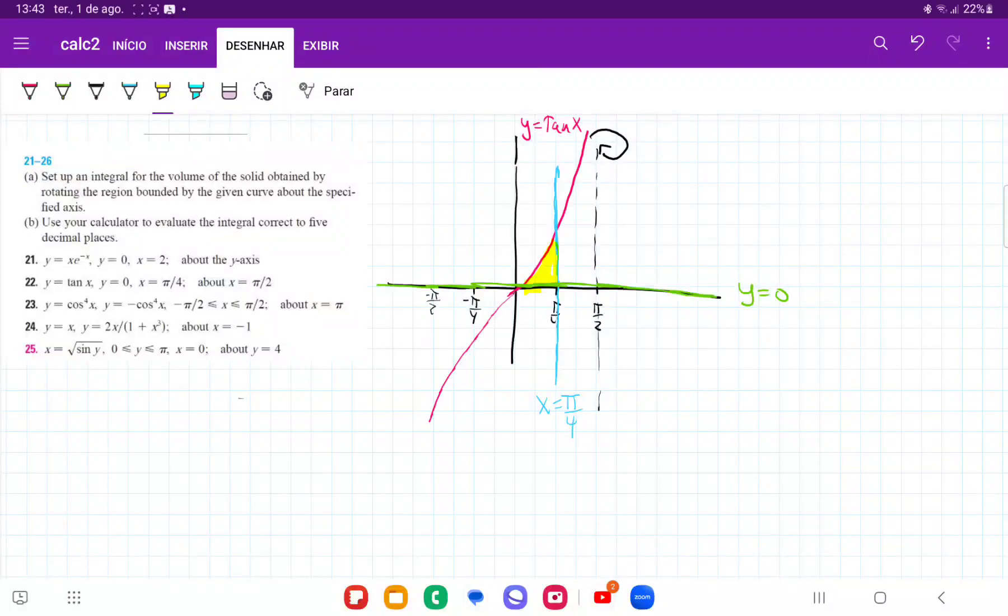For number 22, they want us to take the area bounded between these curves and revolve it around the line x equals pi over 2. So I've drawn these curves here, and we can see that the area bounded between them is this part shaded in yellow.